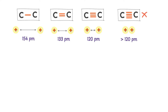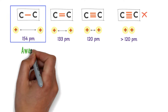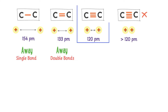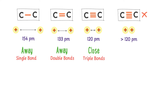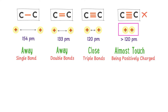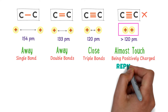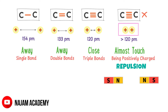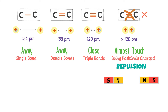Listen carefully. In a single bond, the two carbon nuclei are far enough apart to bond. In a double bond, the nuclei are still sufficiently separated. In a triple bond, the nuclei are close together but can still form the bond. However, in a quadruple bond, the two carbon nuclei would almost touch each other. Since both nuclei are positively charged, they would repel each other — just like the similar poles of two magnets. Therefore, carbon cannot form four bonds with another carbon atom.